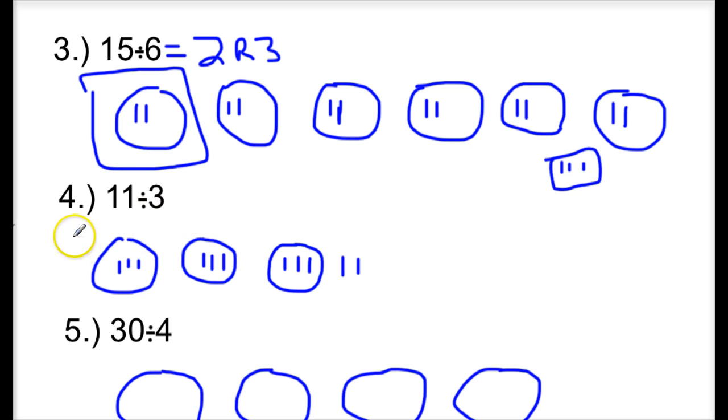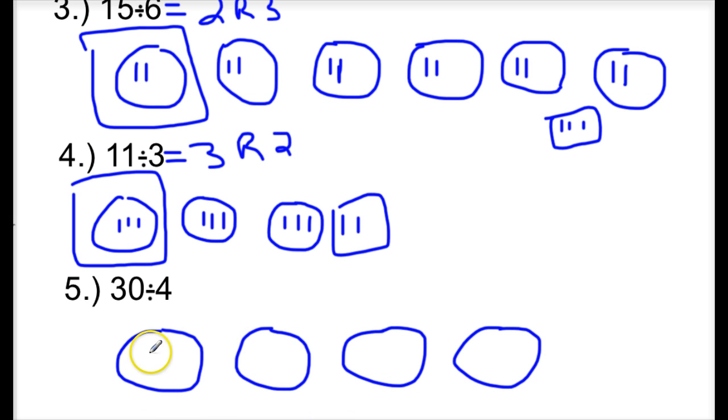Look at number 4, our quotient is 3, and our remainder is going to be 2. And number 5, we should have 4 groups, and I want you to share tomorrow in class what you got for the quotient and the remainder for number 5.